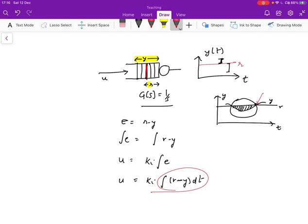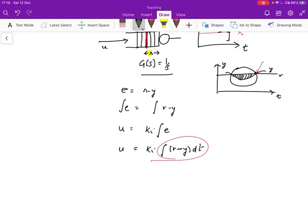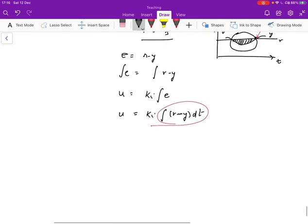In fact, it's a maximum for that excursion of Y away from R. So the integral mode control allows us to deal with accumulated error. However, it makes the control a little bit less stable.